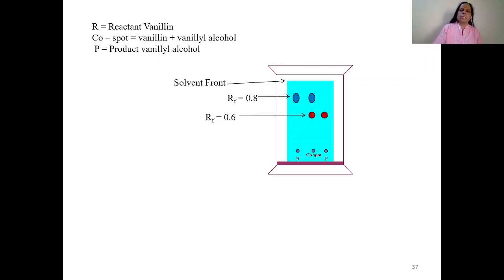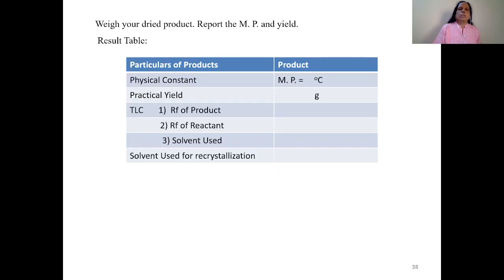R is your reactant, that means vanillin. Then P is product vanillyl alcohol, and co-spot, that means product and reactant is there. Now here you will observe Rf value of your reactant is more and Rf value of product is less than that. If you co-spot that, then you will get in middle part, you will get two spots, one corresponding to your product and one corresponds to your reactant. So match these. If there is any part of that reactant in your product, then there is no completion of reaction. Incomplete reaction is there. Now if we see product spot, then there is no any unreacted vanillin.